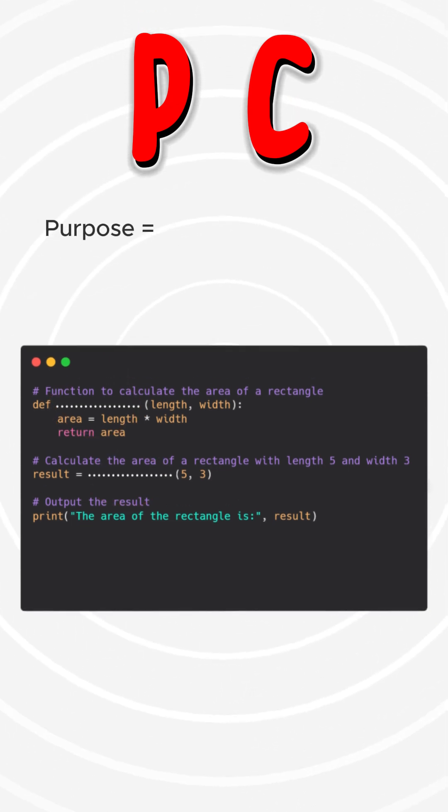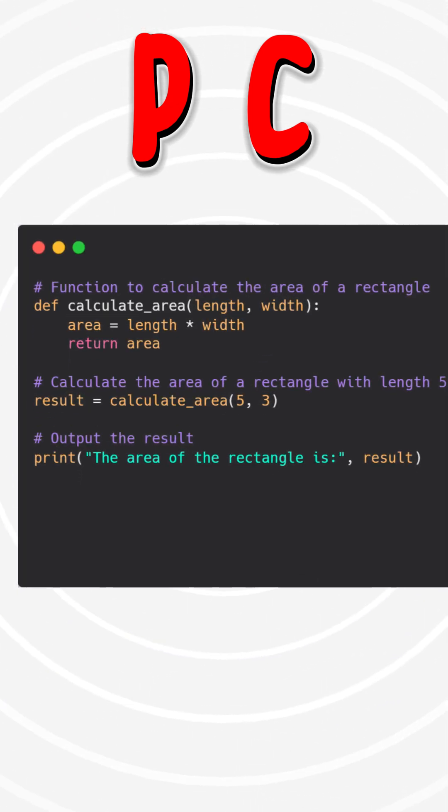The function's purpose is to calculate the area of a rectangle. We need a name that clearly describes what the function does and is concise too. I came up with calculate_area. This name clearly states its purpose in calculating the area of a rectangle and it is concise too.